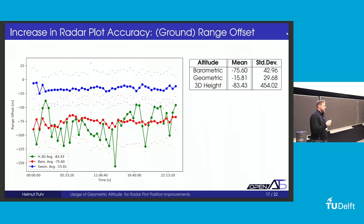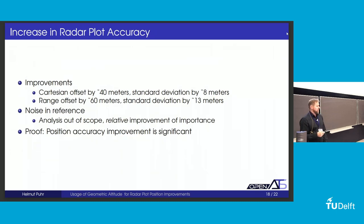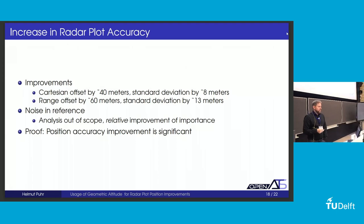We can see that the reconstructed geometric altitude gave by far the best results — an offset of only 50 meters with a standard deviation of 32 meters, while the original barometric one was above 90 meters offset with 40 meters standard deviation. The 3D height as delivered by the radar was suboptimal for this application. The same result in range offset shows an even larger improvement: the reconstructed geometric altitude gives a decrease in offset of about 60 meters and also a decrease in standard deviation. We would argue that the precision accuracy improvement is significant and the model is additionally verified. One could argue that inaccuracy in the reference position degrades the accuracy of our measurements, but we're not looking at absolute values — we're looking at the relative performance increase.